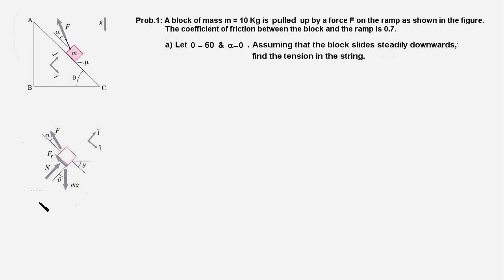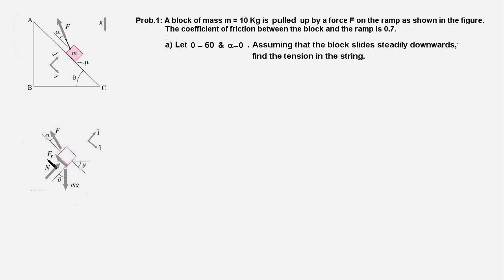Here is the FBD of the block. The weight mg acts downwards, the force F is pulling the block upwards, and the normal reaction N acting on the block due to the inclined plane is normal to the surface. The friction force acts up the plane because the block is moving downwards, so friction acts in the opposite direction. The magnitude of the friction force is equal to mu times N.